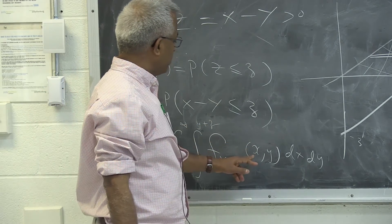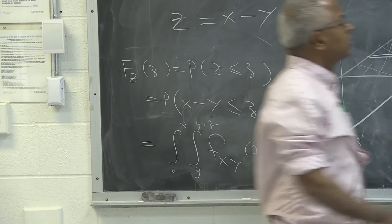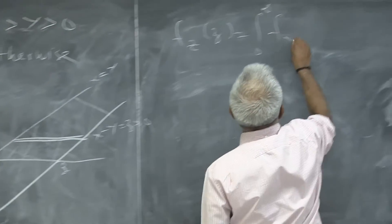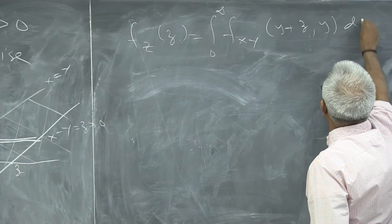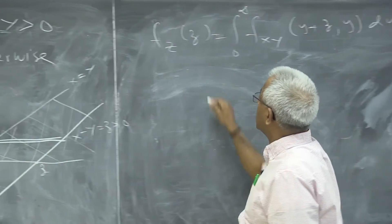And this will be, right? This is going to be f_xy of y plus z comma y dy, right? All right.